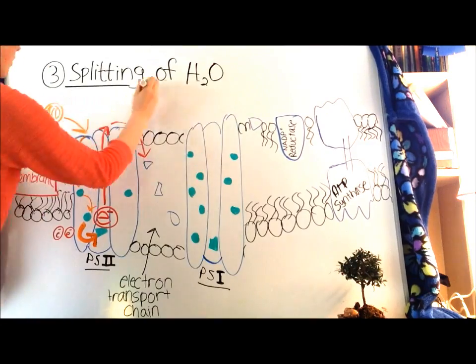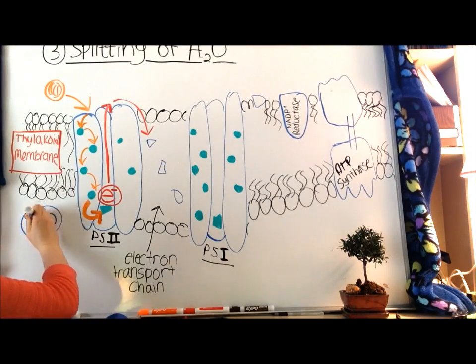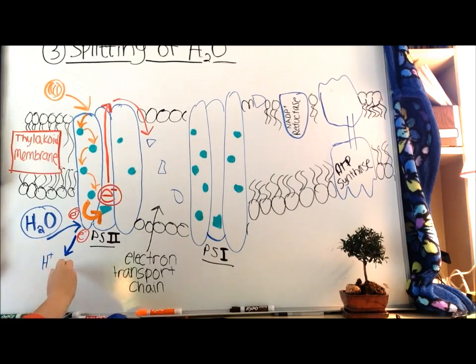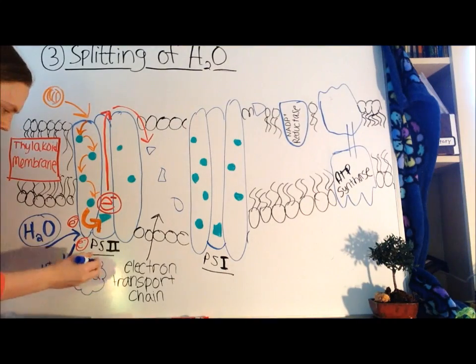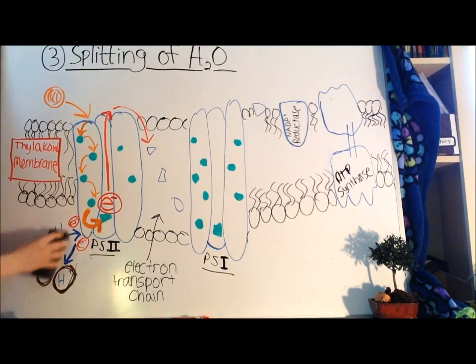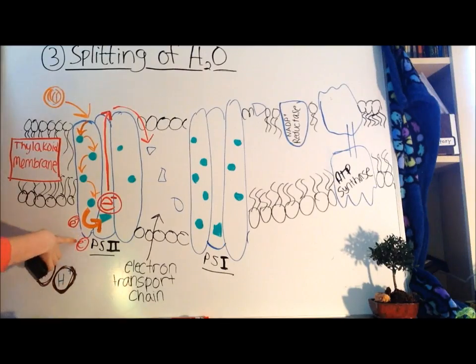Now onto step three, splitting of water, or H2O. While the electron is at the top of Photosystem II, a molecule of water is split into one molecule of oxygen and is emitted as a byproduct, and two hydrogen protons. Protons accumulate on the inside of the thylakoid membrane, building up a gradient.